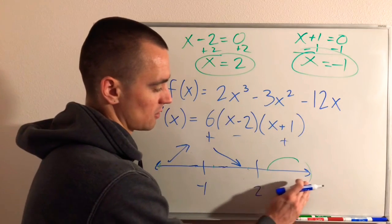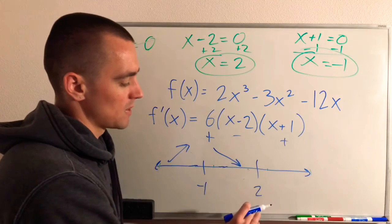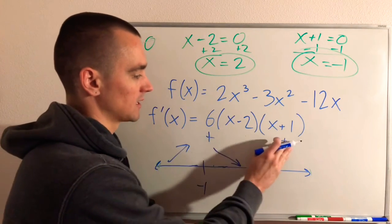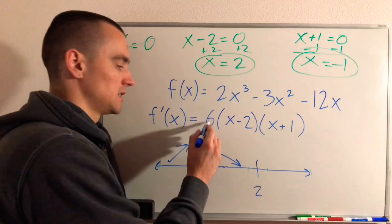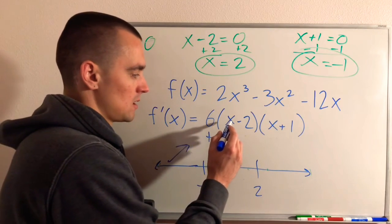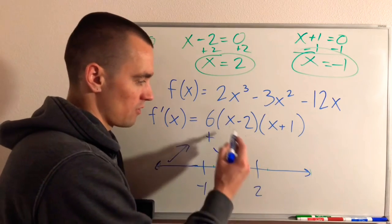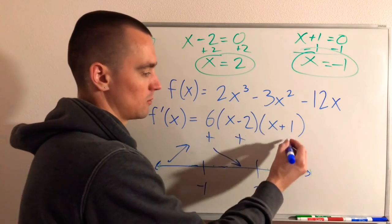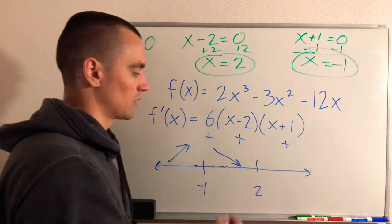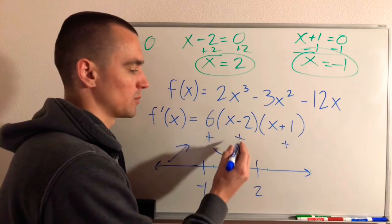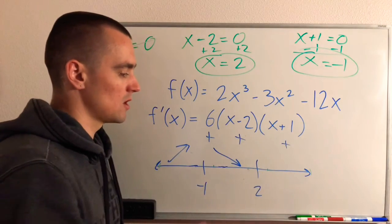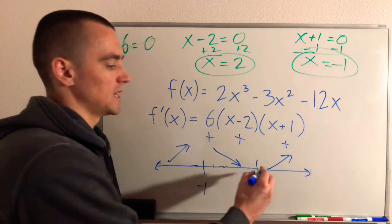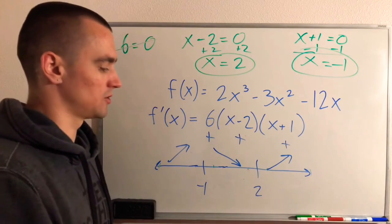Now let's figure out the third interval. Take x equals 3, which is greater than 2. 6 is still positive, 3 minus 2 is positive 1, and 3 plus 1 is positive 4. So we get positive times positive times positive, which gives us a positive slope. So f is increasing for all x greater than 2.